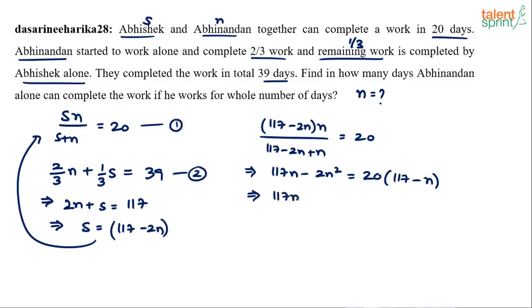So basically 117N minus 2N squared equals to 20 into 117 minus 20N. If you take the terms properly, 2N squared minus 137N plus 20 into 117, that's 2340 equals to 0. And now you have to solve. Solve the quadratic equation. Either use the formula minus B plus or minus root over B squared minus 4AC by 2A or try to factorize this and get the answer. You will get the value of N from this one.